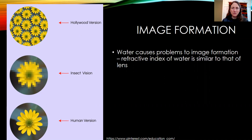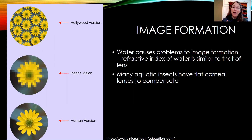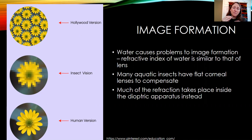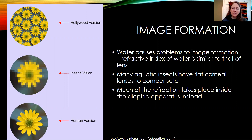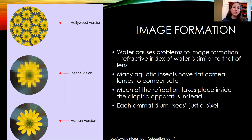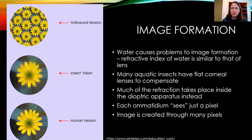For aquatic insects, the problem with image formation is that water has a refractive index similar to that of the lens material, so you can't focus easily in water. To get around that, many aquatic insects have flat corneal lenses instead of curved lenses to compensate. There is also space for refraction inside the dioptric apparatus — from the lens to the cone — where refraction can happen. To create an image, each omatidum sees a pixel, and in combination across all the omatidia, the insect sees a complete image.